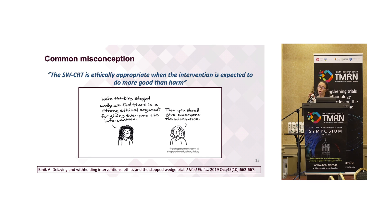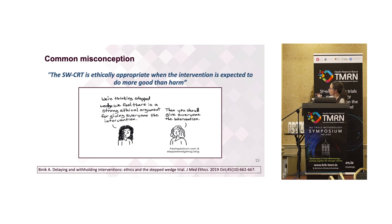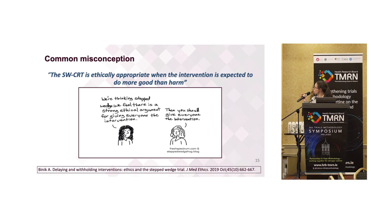A common misconception is that the stepped wedge is ethically appropriate when the intervention is expected to do more good than harm. I think we need to challenge this as a misconception. In a scenario where an investigator comes along saying every single cluster needs to get this intervention — it's a strong ethical argument, everyone needs it, we believe it's going to be beneficial — one might respond that perhaps everyone should get the intervention. But actually it's very tricky, as even in my example from a couple of weeks ago, it's very difficult to know what to do when you're in that situation.